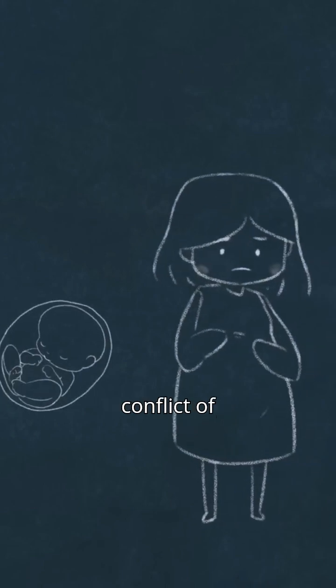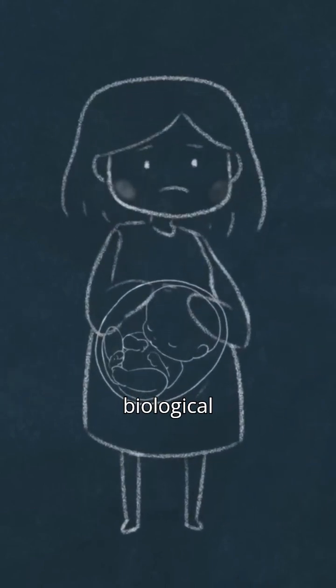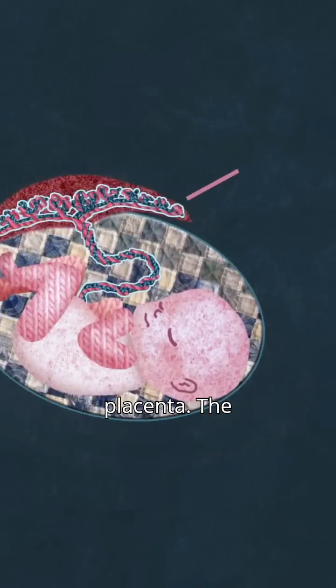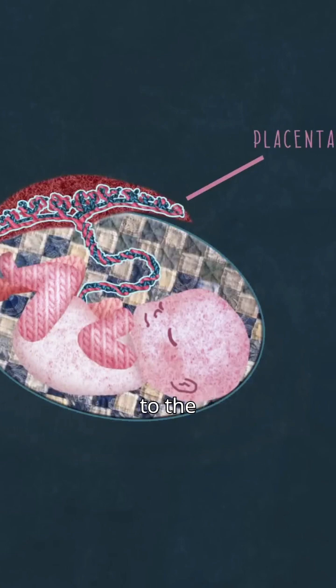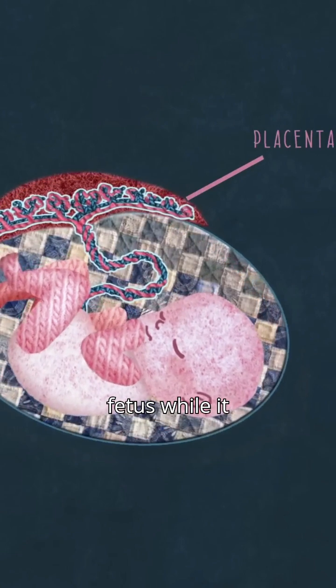This evolutionary conflict of interests places a woman and her unborn child in a biological tug-of-war that plays out inside the womb. One factor contributing to this internal tussle is the placenta, the fetal organ that connects to the mother's blood supply and nourishes the fetus while it grows.